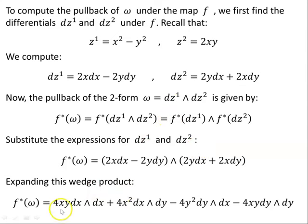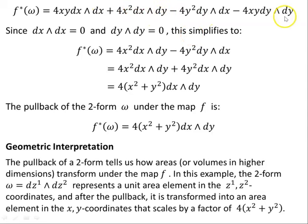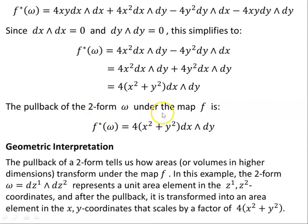Expanding this wedge product, we get several terms. Notice dy∧dy = 0 and dx∧dx = 0, so those vanish, leaving only the two middle terms. We then use antisymmetry: swapping the order of dy∧dx gives dx∧dy but introduces a minus sign, which cancels the negative sign already present, giving a plus. Collecting the common factor dx∧dy, we end up with 4(x²+y²) outside. Therefore, the pullback of the two-form omega under the map F is F*omega = 4(x²+y²) dx∧dy.